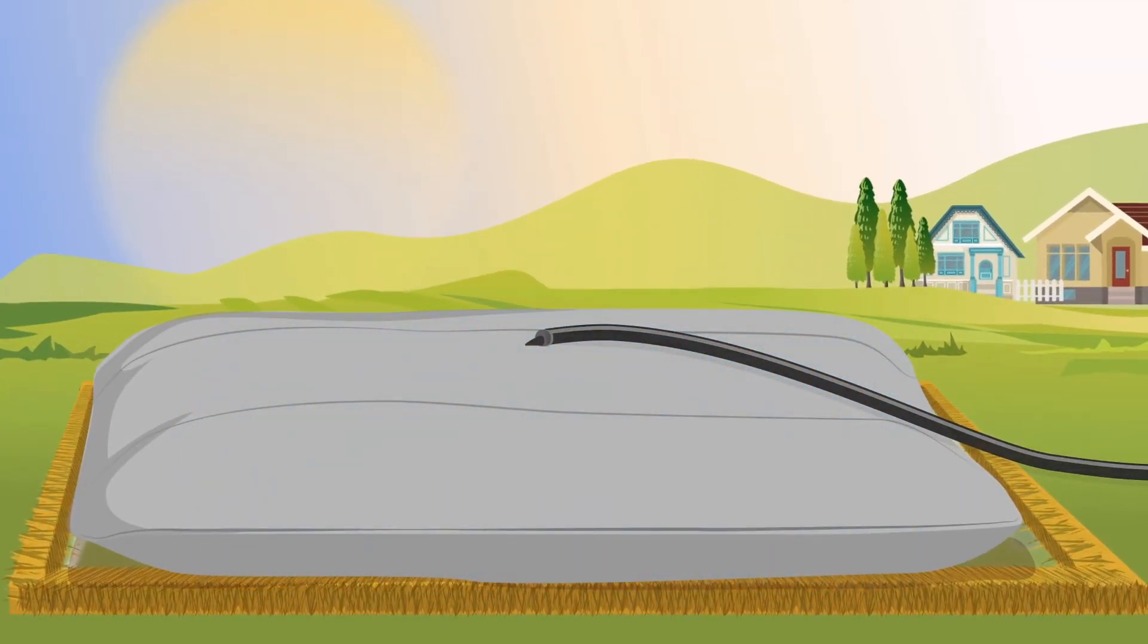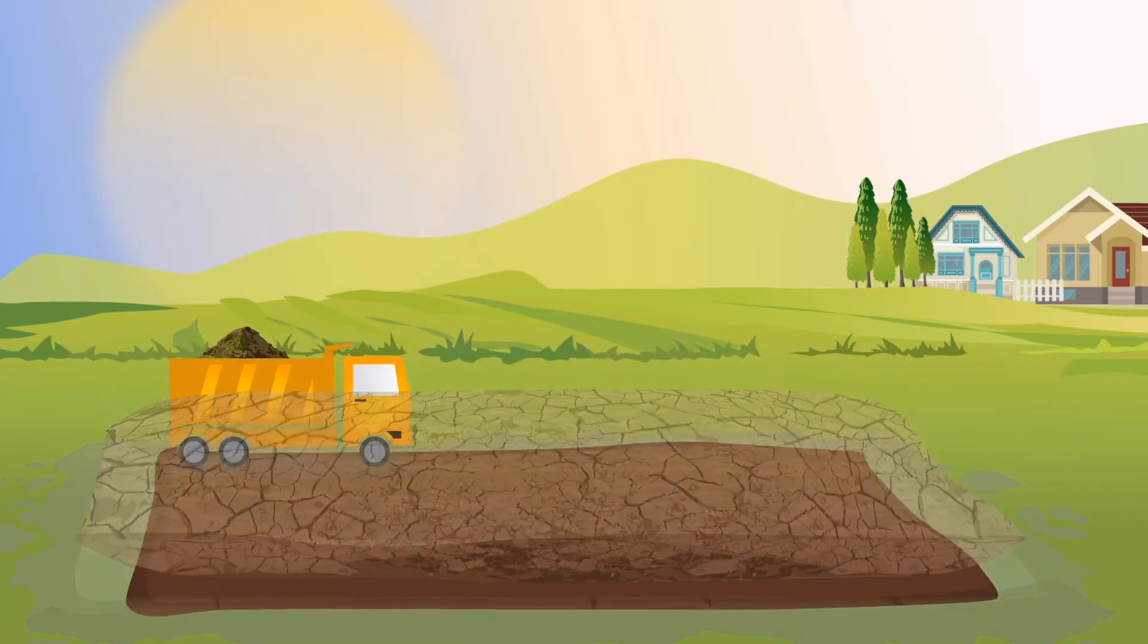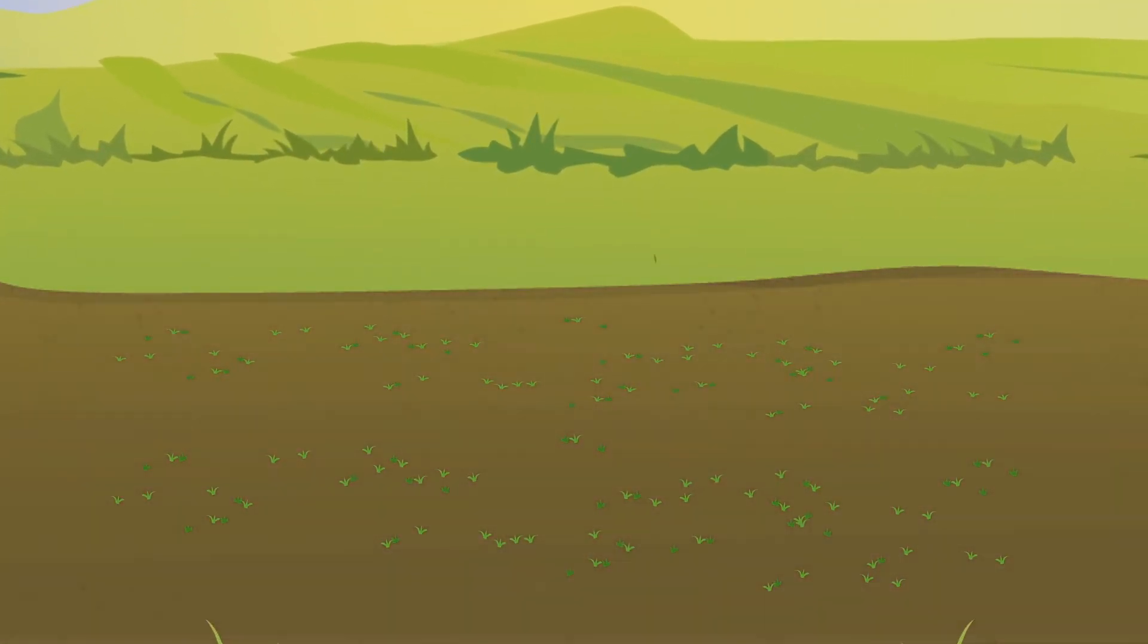Once the sediment has sufficiently dewatered, the bag is cut away and the organically rich sediment is spread on site or hauled away. Then grass is restored to the dewatering area.